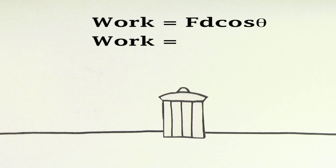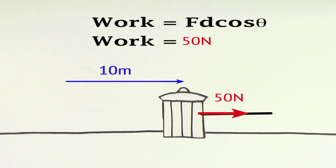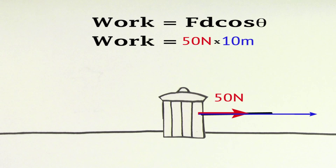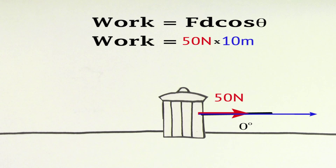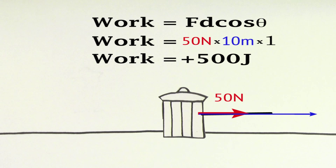To find the work done by the force of tension, we'll plug in the size of the tension, which is 50 newtons. The displacement is 10 meters. And since the tension force is pointed in the same direction as the displacement, the angle between the force of tension and the displacement is 0 degrees. Since cosine of 0 is 1, the work done by the tension force is 500 joules.